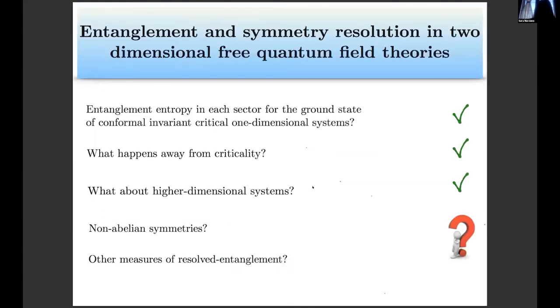Let me try to draw some conclusions and sum up what I said in these 10 minutes. This entanglement equipartition is a characteristic of conformal invariant one-dimensional systems. But I've showed you that also by adding a mass, this entanglement equipartition is still satisfied, so away from criticality. It also holds in higher dimensional systems, at least for a complex massive scalar theory. Some other possible directions could be what happens in presence of non-abelian symmetries or what is the behavior of other resolved measures of entanglement, like negativity or something else. Thank you for the attention.